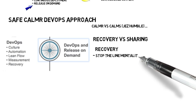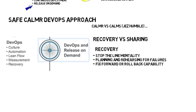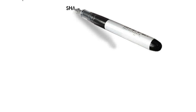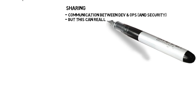Recovery, Scaled Agile says, is a stop-and-align mentality, planning and rehearsing for failures, and fixing forward and rolling back capability. Many of you might be familiar with Chaos Monkey and fault tolerance work — that's the kind of idea behind planning and rehearsing for failures. On the other side, sharing in CAMS is really about communication between DevOps and security, and can also be incorporated into culture. So sharing is very important in the traditional CAMS definition, but may also overlap with the culture aspect.